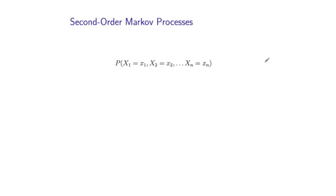OK, so we've defined first-order Markov processes. We'll now see how to generalize these to what are called second-order Markov processes. And in fact, this will be a very straightforward generalization of what I've just shown you.